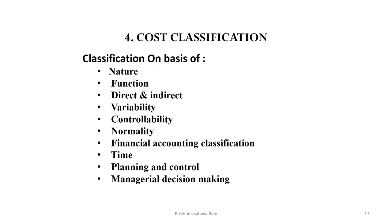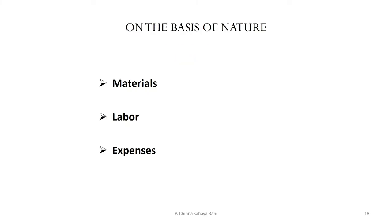Costs are classified in various ways: on the basis of nature — material, labor, and expenses; on the basis of function — whether it is a manufacturing cost, commercial cost, or selling and administration cost; on the basis of direct or indirect — direct costs are directly attributable to the commodity being produced, while indirect costs cannot be directly related to the good or service provided.